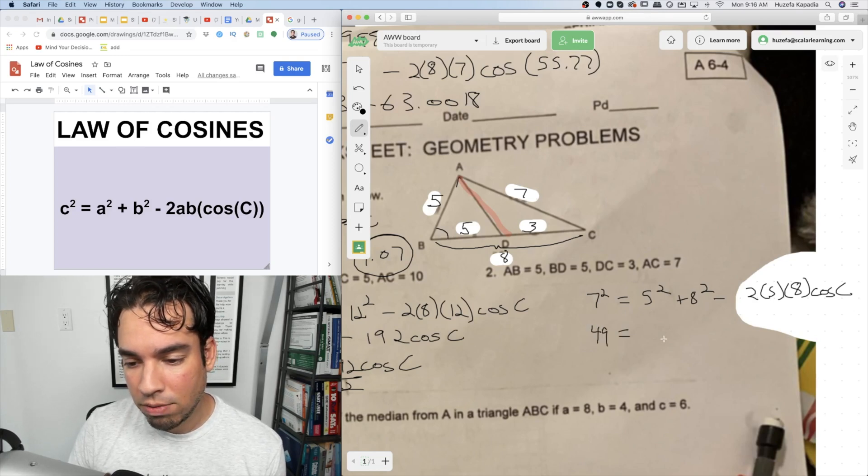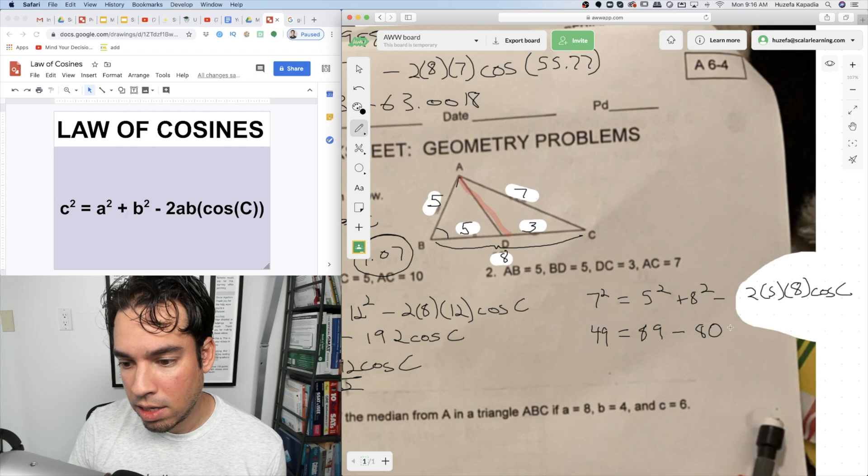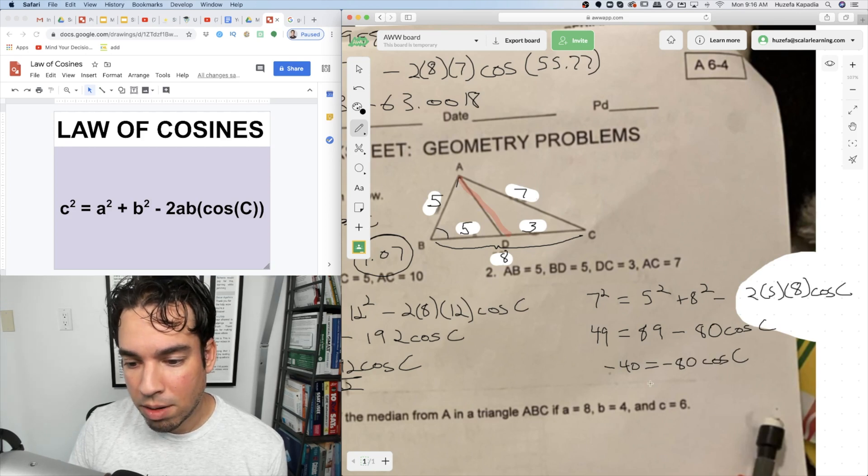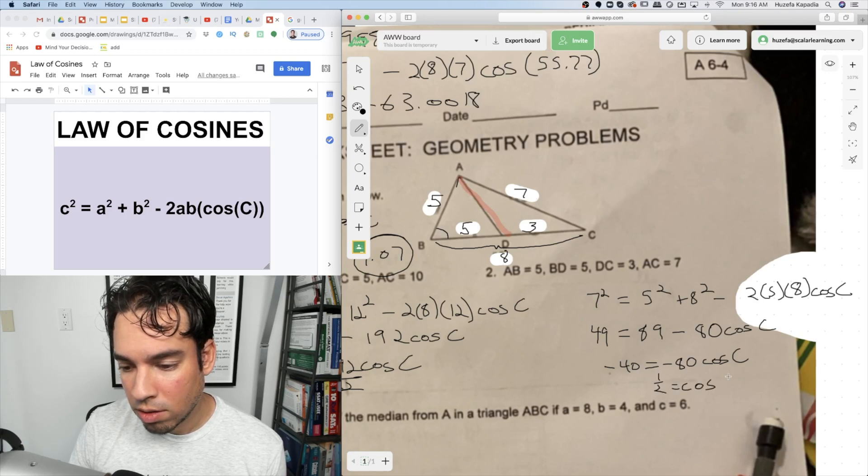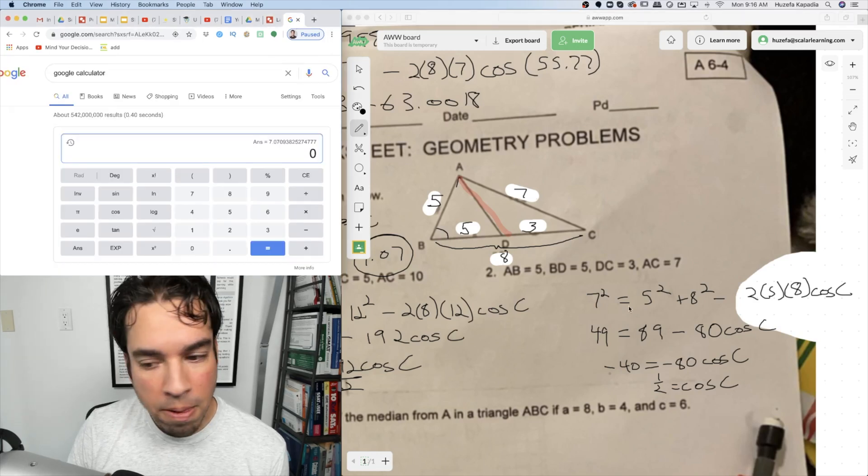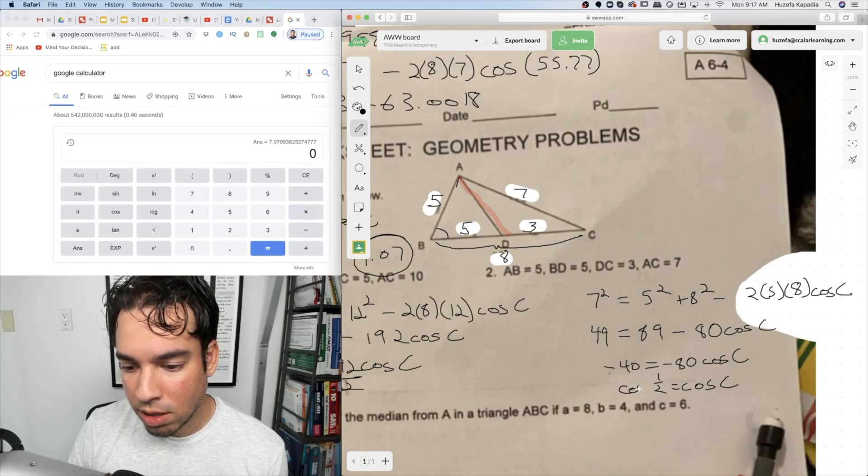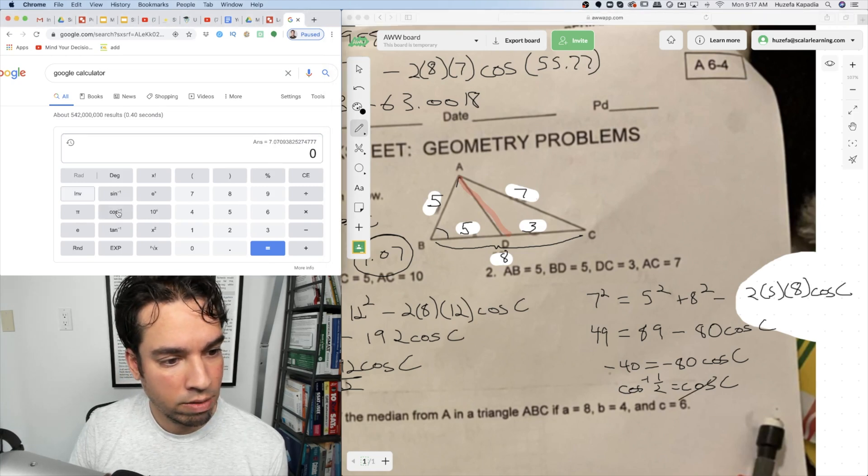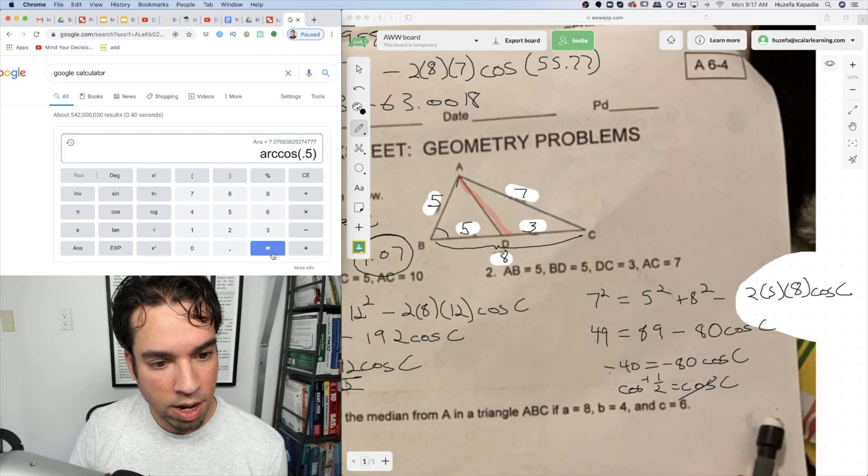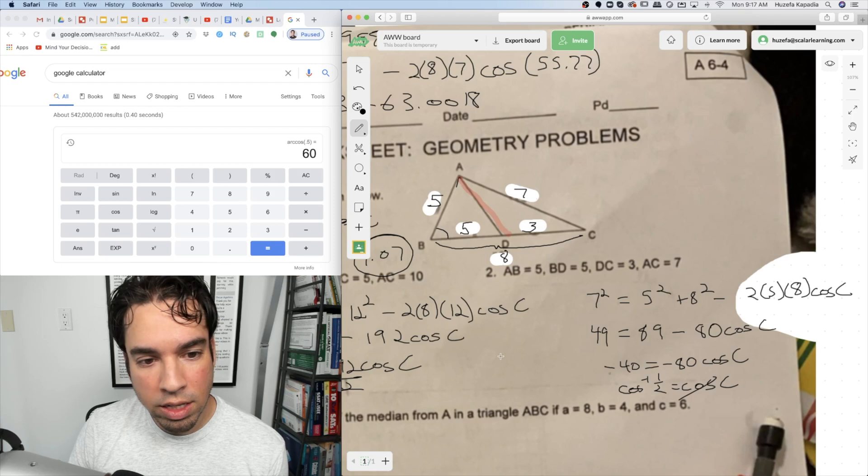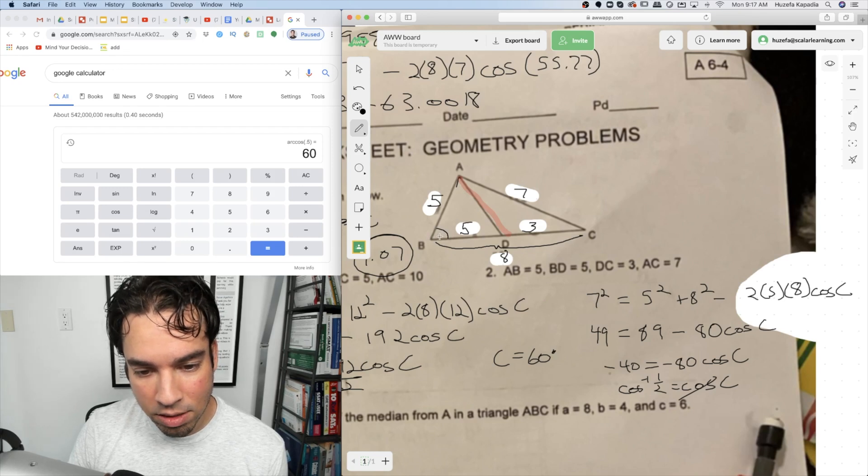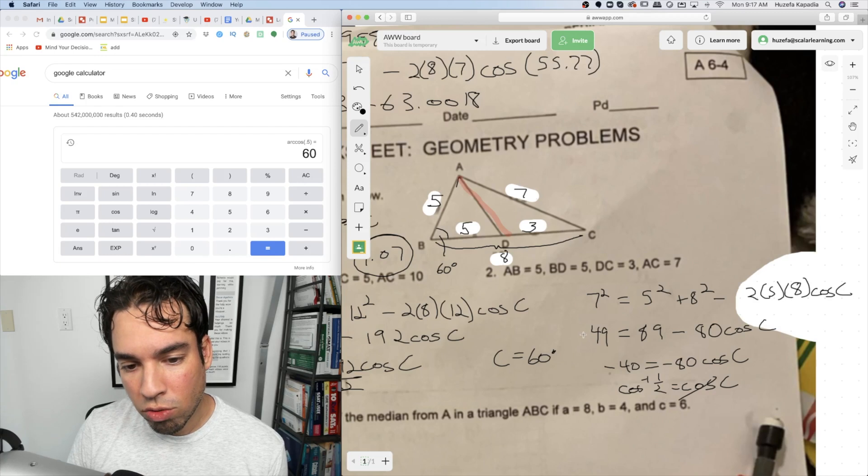So let's follow the same steps again. 49 equals 25 plus 64, which is 89, minus 80 cosine of C. So I'm going to subtract 89 from both sides. Negative 40 equals negative 80 cosine C. And then we divide by that. That's 1 half equals cosine C. We're going to get a nice round number here. I think 45 or something, right? And we take arc cosine of both sides to kind of get rid of this. So arc cosine or inverse cosine 0.5 or 1 half is, oh yeah, 60. That's right, not 45. So C equals 60 degrees. Okay? That's great. So that means this angle is 60 in this case. I'll put a little 60 degrees there.